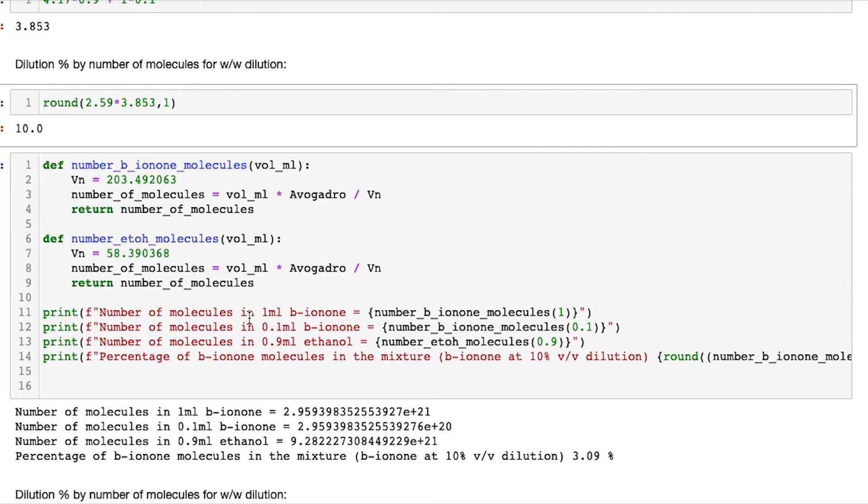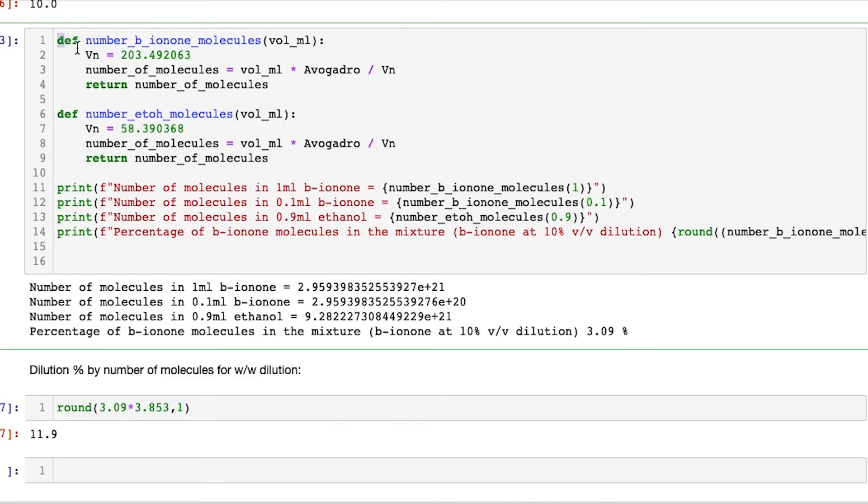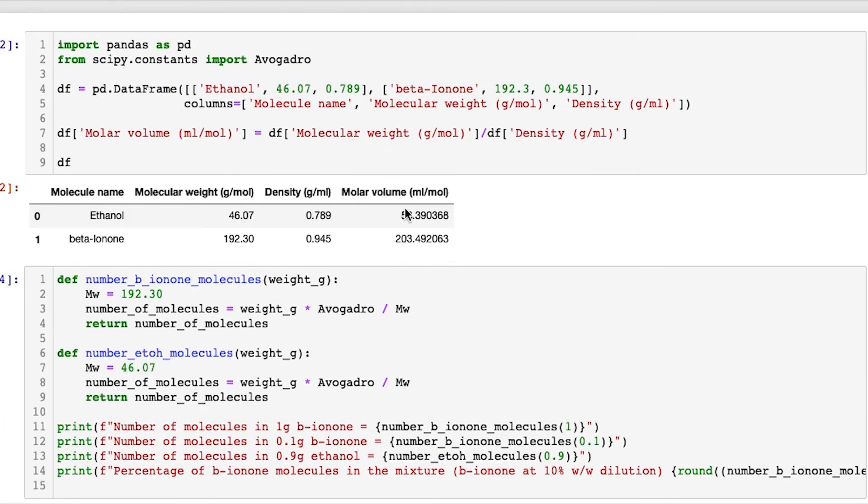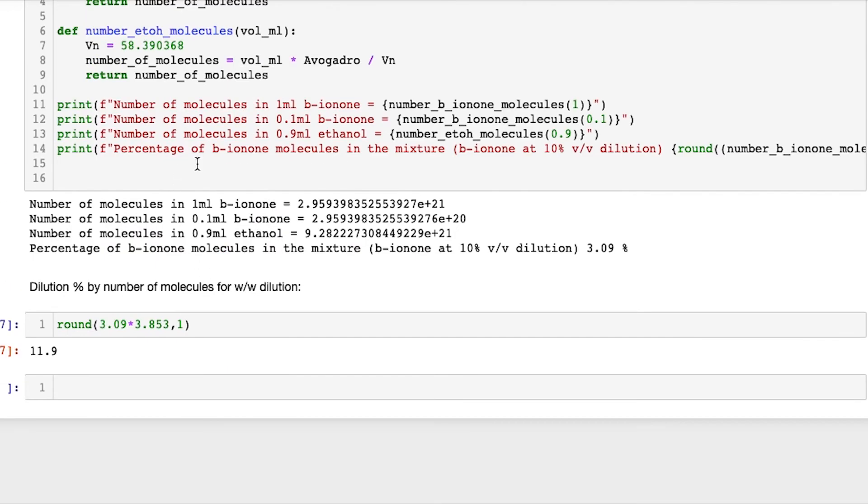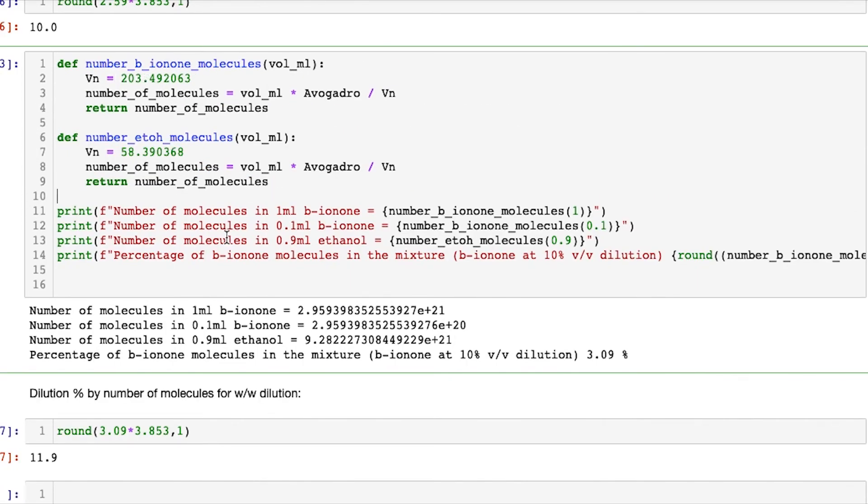Now the key difference here is what happens when we repeat all of these calculations and we use volumes instead. To calculate the number of molecules when we use a volume is a slightly different calculation and it all depends on this molar volume, which is that quantity that we had to calculate originally that depended on the density. This is the key thing. The density is affecting this molar volume and that has to be taken into account now for our calculation for the number of molecules. So we repeat the same calculations. We measure one milliliter of beta-ionone and then we make a 10%, but this time by volume instead of weight solution. What we find is that's now got 0.1 milliliters of beta-ionone and 0.9 milliliters of ethanol solvent. And this is how many molecules are in each of those volumes.